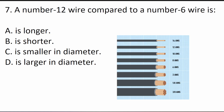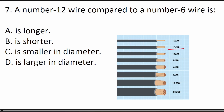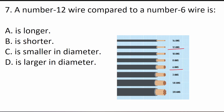Question 7 asks: a number 12 gauge wire compared to a number 6 gauge wire is what? AWG stands for American Wire Gauge, the common standard for wire gauges in the U.S. As you can see from the diagram, the 12 gauge wire is significantly smaller than the 6 gauge wire. So the answer is C — it is smaller in diameter.